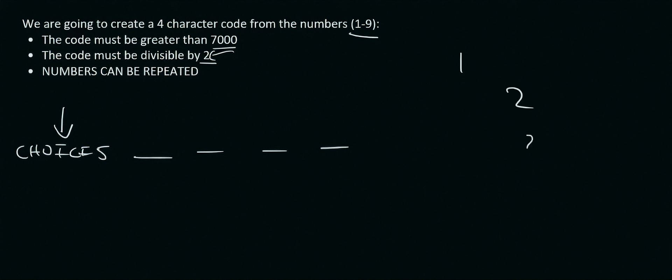So for the first one, you've got these numbers 1, 2, 3, 4, 5, 6, 7, 8 and 9. What type of numbers should go, well let's say here's the code, what type of numbers could you start with so that the entire code is bigger than 7,000? Well, you could start with a 7, an 8 or a 9, right? Because any number that starts with one of those will be bigger than 7,000. So we have 3 options there, so let's put a 3.